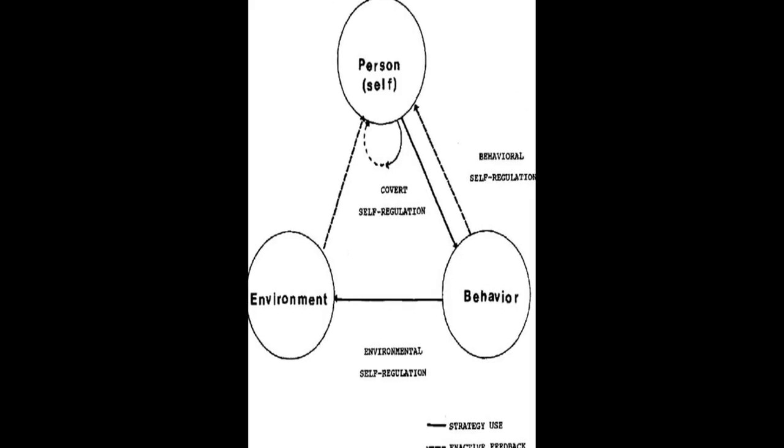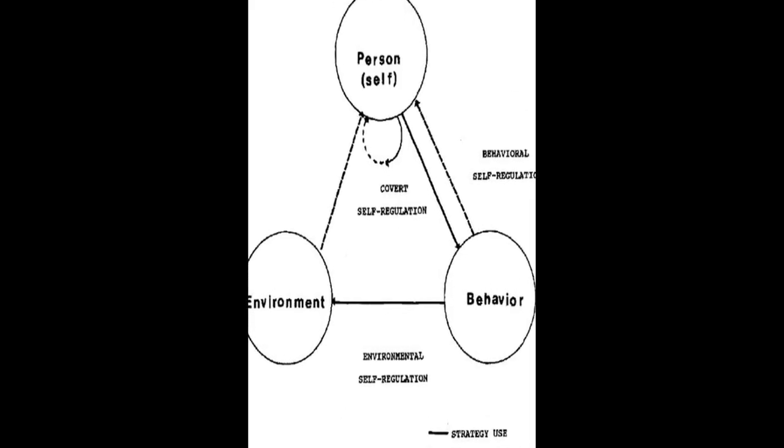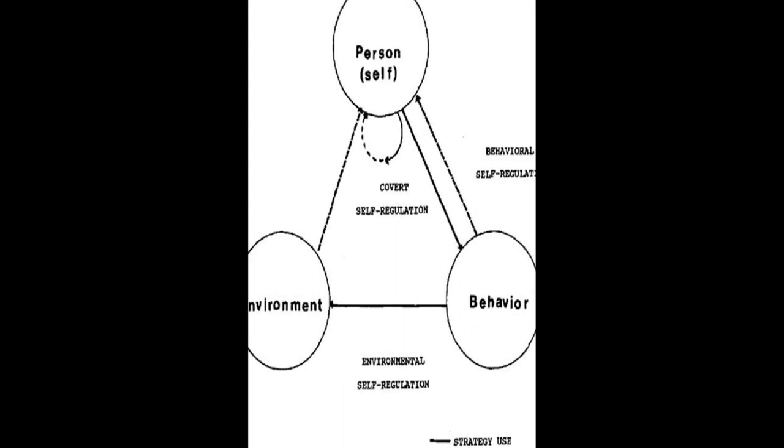The models are then compared in terms of phases and subprocesses, how they conceptualize metacognition, motivation, and emotion, top-down/bottom-up, automaticity, and context.